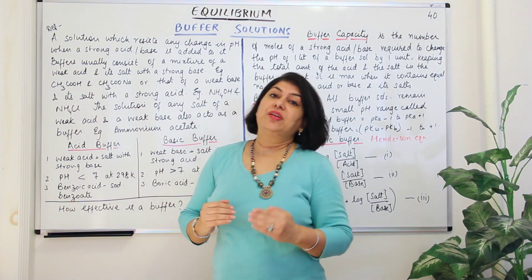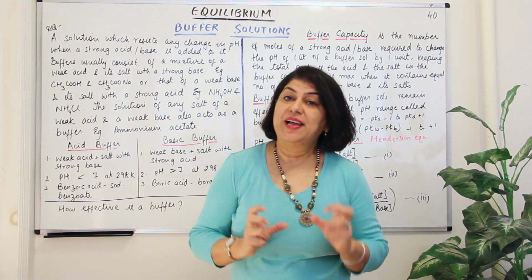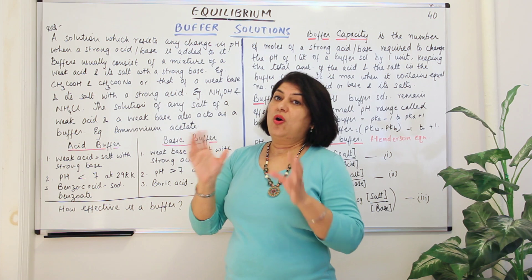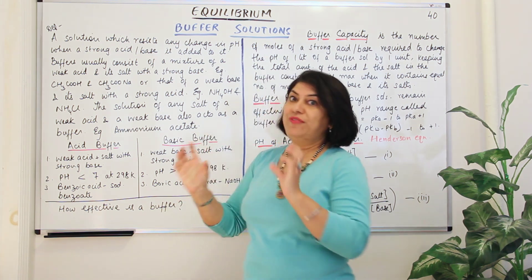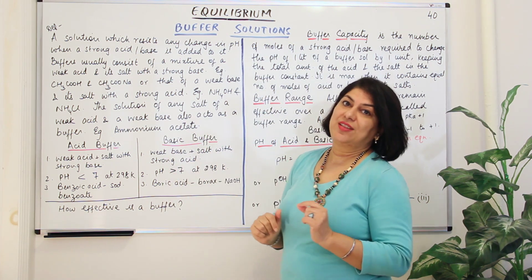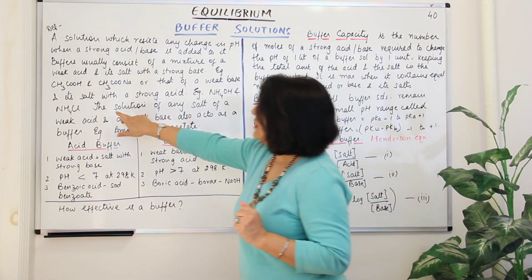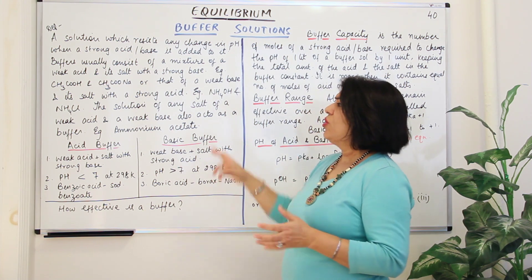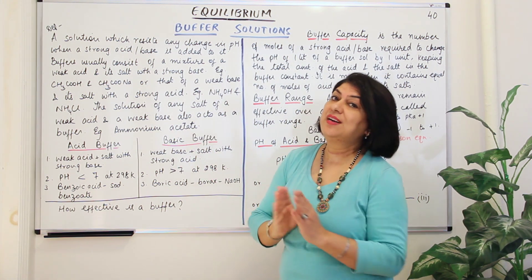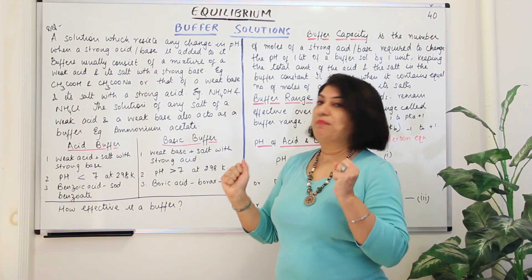There is also a third category of solution which can act as a buffer, and that is when you have a salt formed from a weak acid and a weak base — that also results in the formation of a buffer solution. So the solution of any salt of a weak acid and a weak base should also act as a buffer and have that buffering effect.